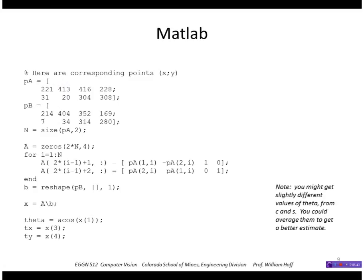So in MATLAB we can solve this problem using this set of commands. Here's the corresponding points, here's where we form the matrix A. So if there's n points I have two rows for each point, and here's where we form the matrix B. Here we use a MATLAB shorthand called reshape which simply takes the matrix PB and reshapes it into something long, number of rows by one column wide. And here's where we solve for x. And then I extracted from x the values that I'm interested in which is theta, tx, and ty.